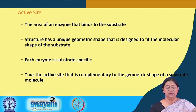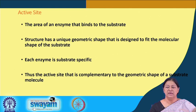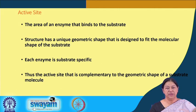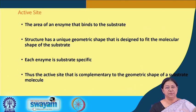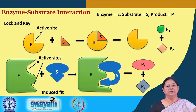The active site is important because it is the region on the protein where the enzyme binds the substrate. The structure has a unique geometric shape and each enzyme is substrate-specific. There are two models: the lock-and-key model and the induced fit model, both describing shape complementarity between enzyme and substrate.